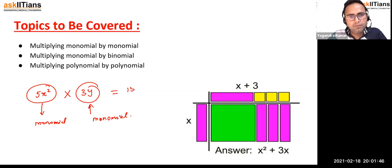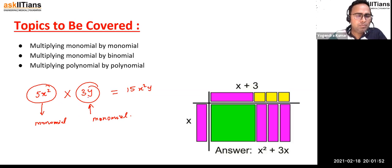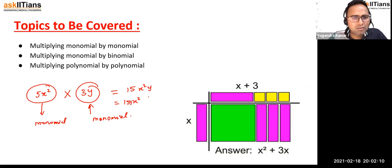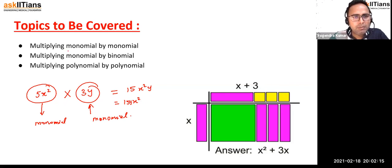So 5 times 3 will be 15, and x squared times y gives us x squared y. The coefficient multiplies the coefficient — 5 times 3 is 15 — and then x squared times y. You can write it as 15x squared y or 15yx squared; it doesn't matter because multiplication is commutative. That is multiplying monomial to monomial.